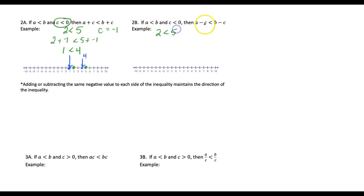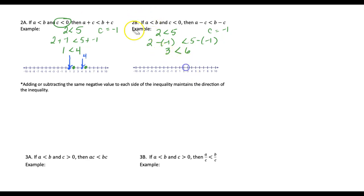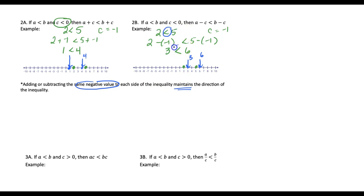Going back to 2 is less than 5, what if we subtract a negative number? Using c of negative 1: 2 minus negative 1 makes 3, and 5 minus negative 1 makes 6, and that inequality is maintained. So 2 was on the left of 5, and when we subtracted negative 1, we ended up with 3 is less than 6, and 3 stayed on the left. So adding or subtracting the same negative value also maintained the inequality — if we started with a less than, we ended with a less than.